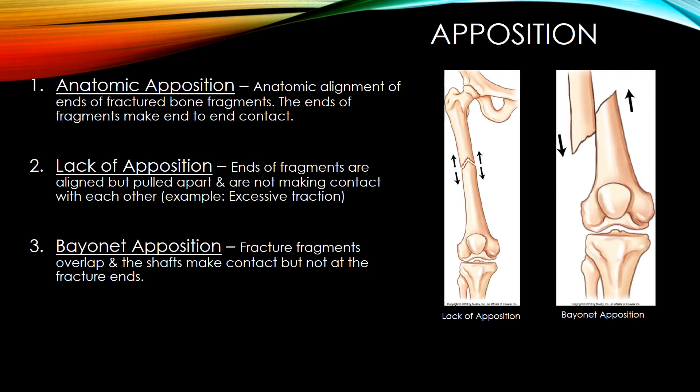The first term is anatomic apposition: anatomic alignment of the ends of fractured fragments where the ends make end-to-end contact. The second is lack of apposition: ends of fragments are aligned but pulled apart and not making contact, for example if excessive traction is used. Bayonet apposition is a fracture fragment overlap where the shafts make contact but not at the fracture ends.